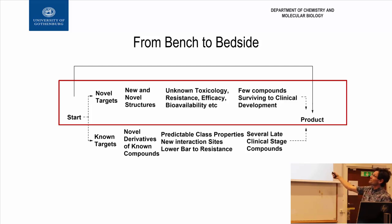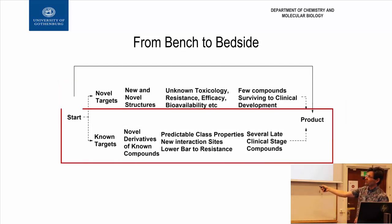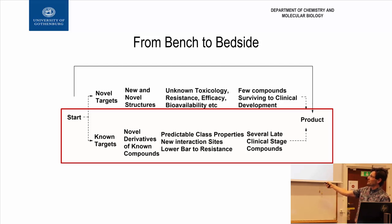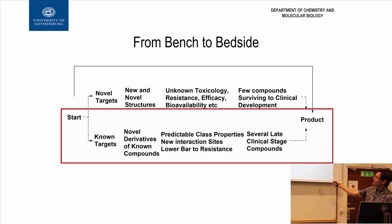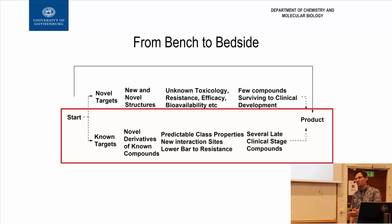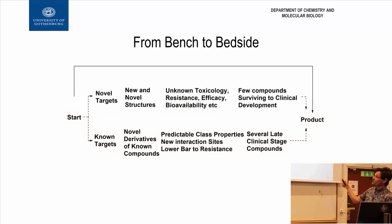Usually, the outcome of pursuing novel targets is that only a few compounds survive into clinical development. We might start with 10,000 compounds, and end up with a handful, and most of those will probably fail. If we instead pursue known targets — we know about quite a few good targets for developing antibiotics — then we can predict a lot of things: properties, new interaction sites, and ways to address resistance. However, the compounds we get will usually use a mechanism that is old, which creates resistance problems, as you will hear about more in this course.